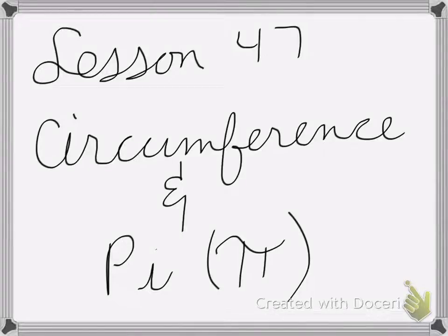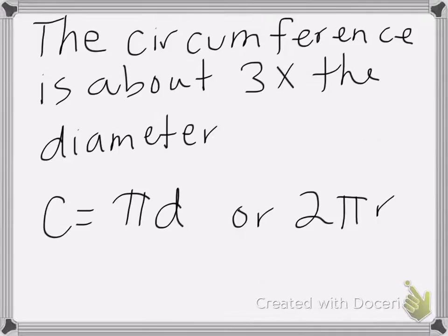All right, so lesson 47 is on circumference and pi. Remember, circumference is about 3 times the diameter. It's about that, it's close.